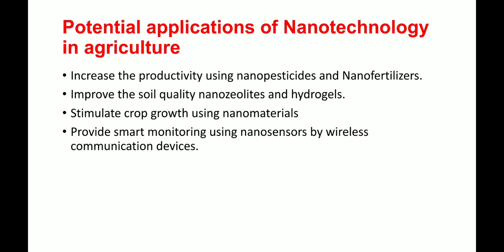Third, nanomaterials are used to stimulate crop growth by supplying nutrients and increasing crop growth rates. These nanomaterials are used for coating or encapsulating agricultural inputs to improve their efficiencies. Fourth, smart monitoring using nanosensors by wireless communication — nanosensors provide microclimate information of the field, used at the time of coating materials to give detailed information regarding the needs of the soil or crops.